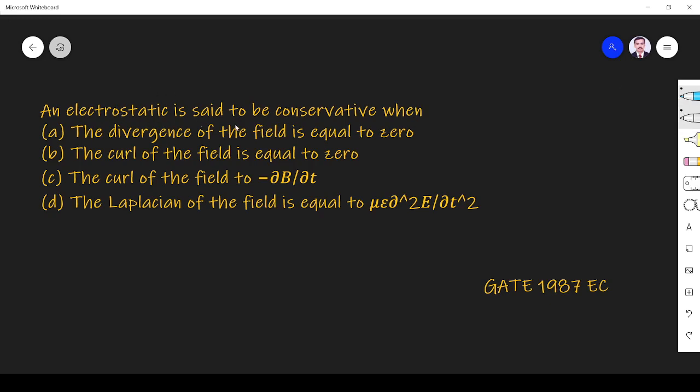The question asks: an electrostatic field is said to be conservative when... We know that the electrostatic field E is a conservative field.